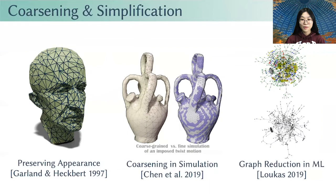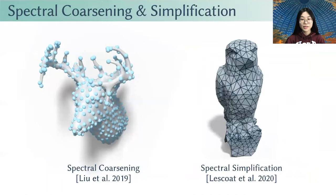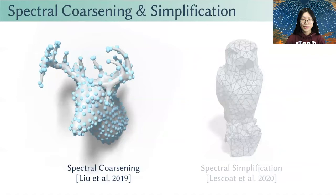Recent methods show that it is possible to simplify a discrete operator while preserving its spectral properties. In particular, there is Liu and colleagues' work in 2019 on spectral coarsening, and Lescoat and colleagues' work in 2020 on spectral simplification. The closest one to our work is Liu and colleagues' work in 2019.